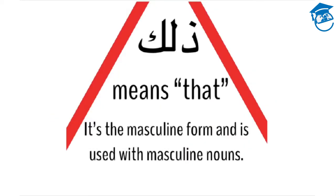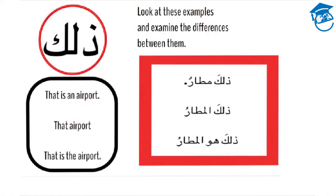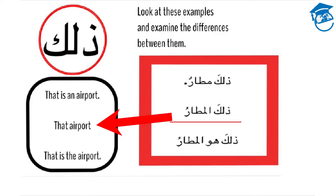Valika means that in Arabic. It's the masculine form and it's used with masculine nouns. Now let's look at some sentences using valika. Look at the following examples and examine the differences between them. Valika mataron means that is an airport. In the second example, valika al mataron means that is the airport.